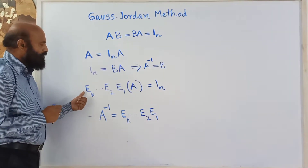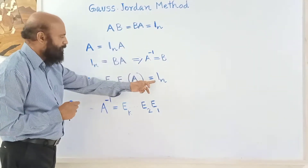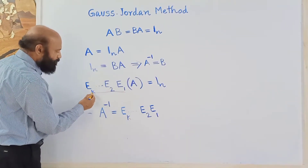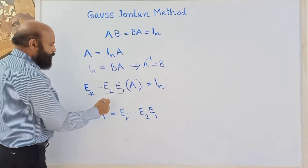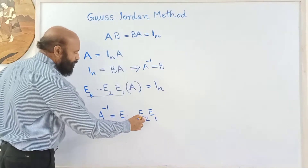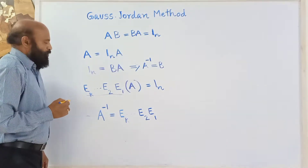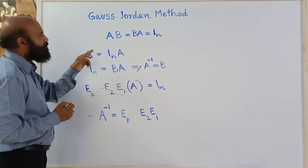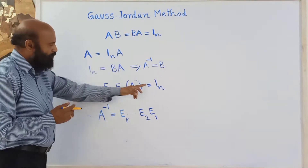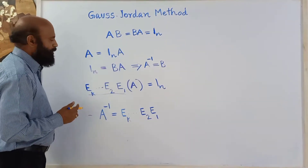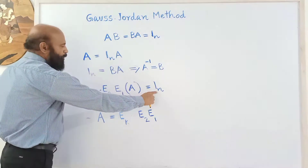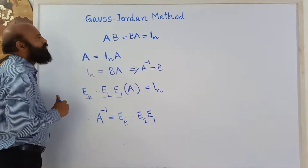Suppose E1, E2, up to Ek are the elementary matrices such that when A is pre-multiplied by them, the result is the identity matrix. Then the inverse of A equals Ek ... E2 times E1. Pre-multiplying a matrix by elementary matrices and transforming it into the identity matrix is known as the Gauss-Jordan method — where A, after a sequence of elementary transformations, is converted into an identity matrix.